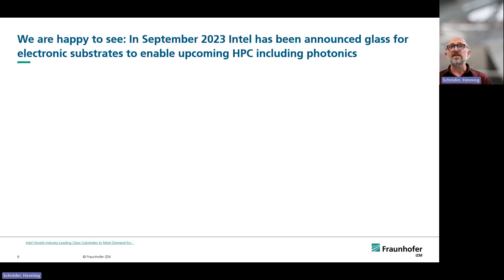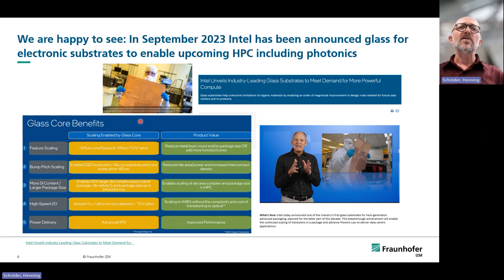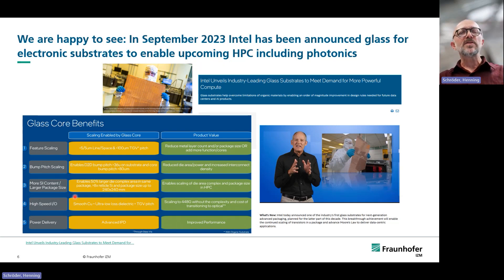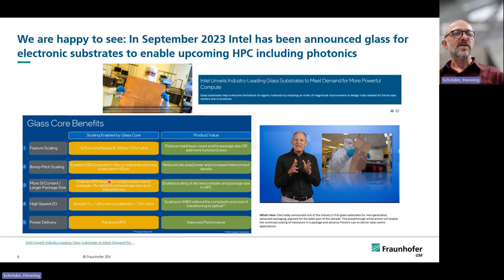We are happy to see that in September 2023, Intel announced glass for electronic substrates to enable upcoming high-performance computing, including photonics. Intel uses industry-leading glass substrates to meet demand for more powerful compute. They argued extensively why glass is the future material for chip packaging on interposers at panel level with very small line spaces, to reach higher complexity. We are quite proud that we started earlier and already have many solutions to enable electronic and photonic system integration using glass.